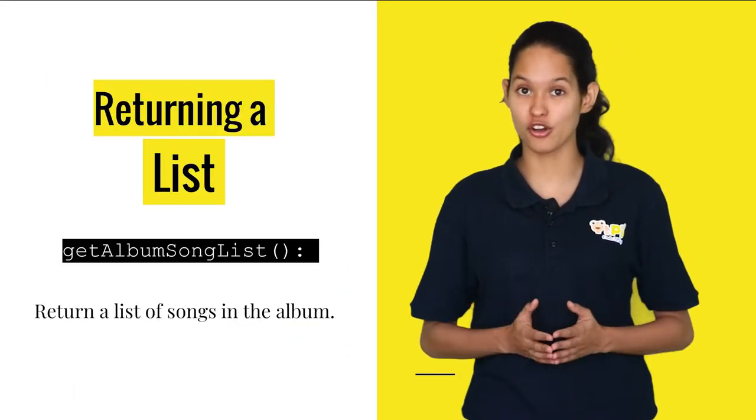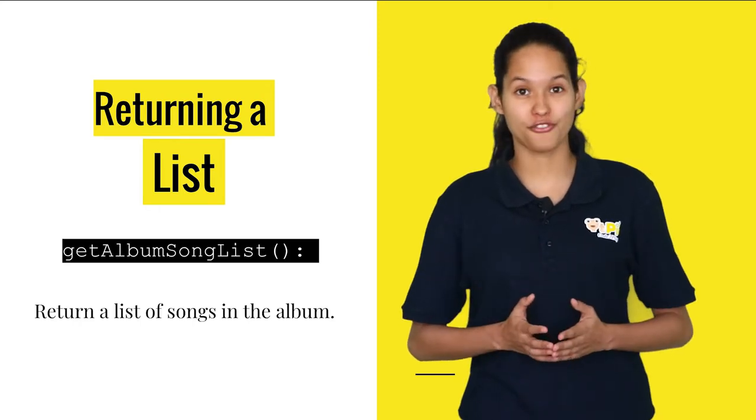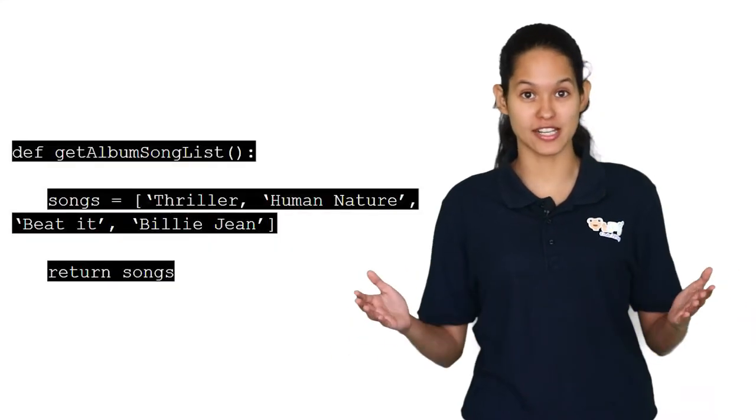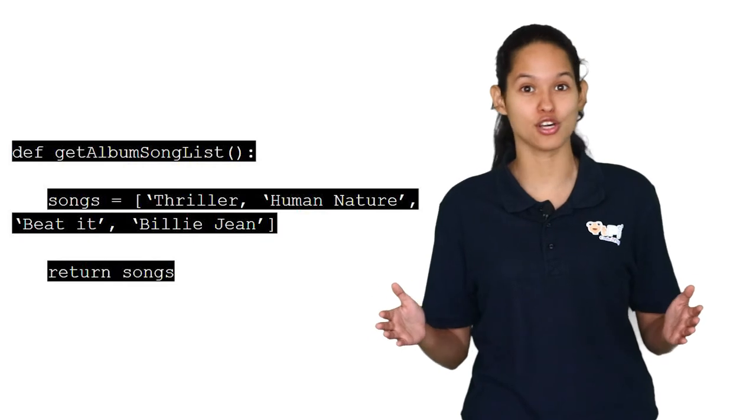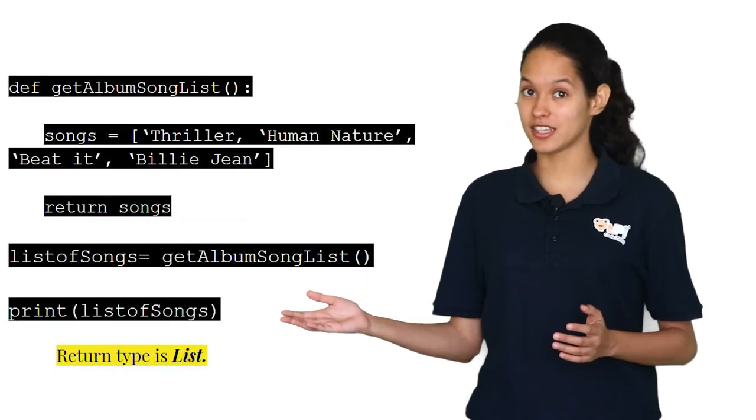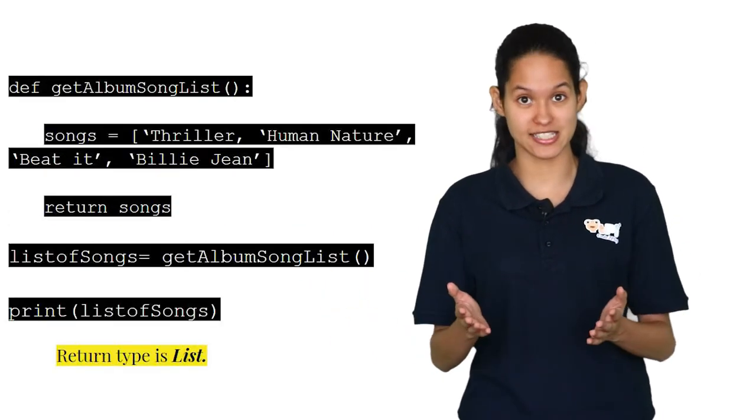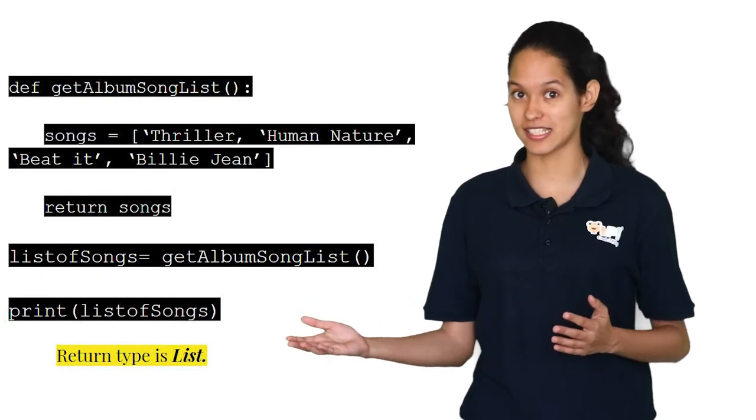If you'd like to know the list of songs in the album, you can call the function getAlbumSongList and it will return all of the songs in the album. Here in this function, it returns a list and finally prints the list.